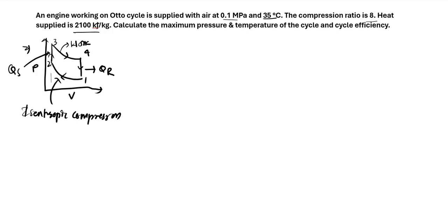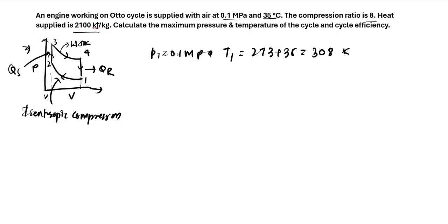In an Otto cycle, process 2 to 3 is a constant volume heat addition process, whereas in a Diesel cycle there is a constant pressure combustion process. The given conditions are: initial pressure P1 = 0.1 MPa, initial temperature T1 = 273 + 35 = 308 K, heat supplied Qs = 2100 kJ/kg at constant volume, and compression ratio R = 8.